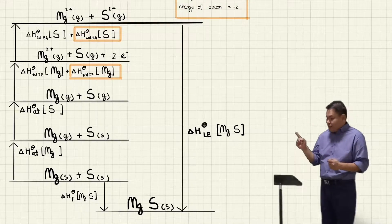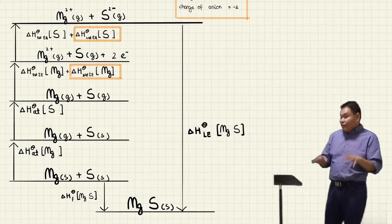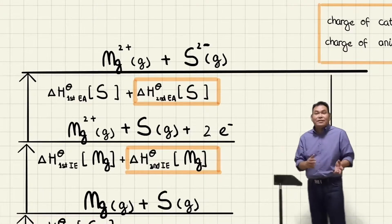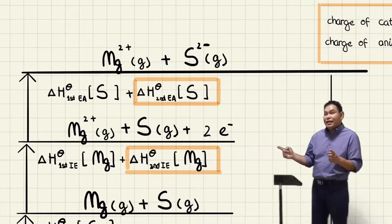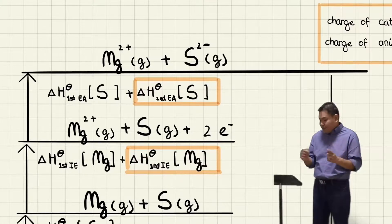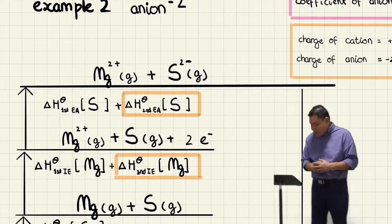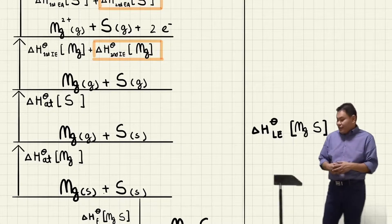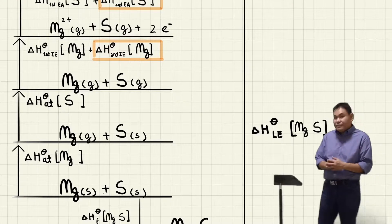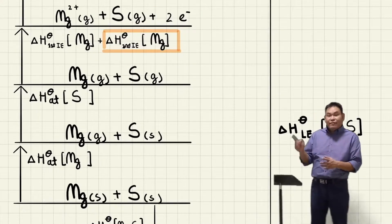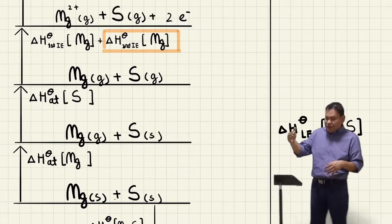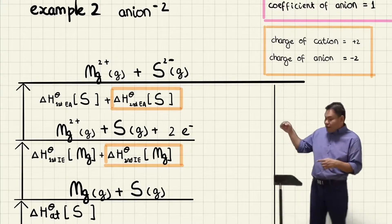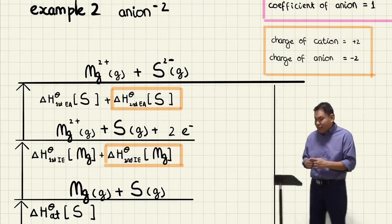The coefficient of the cation is one and the anion is one, so no coefficient adjustment is needed on the delta H values. The charge of the cation is plus two and the charge of the anion is negative two, which means we have the first and second IE, and also the first and second EA. Starting from magnesium solid plus sulfur solid: atomization of magnesium, atomization of sulfur, first and second IE of magnesium, first and second EA of sulfur, then delta H lattice energy of magnesium sulfide.